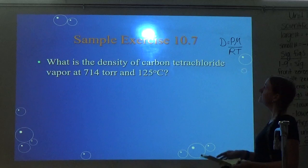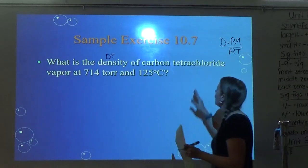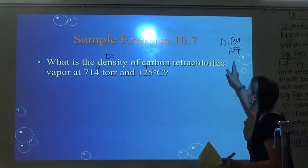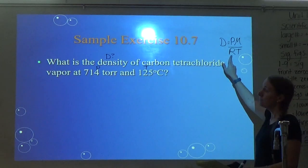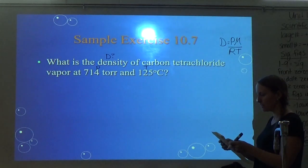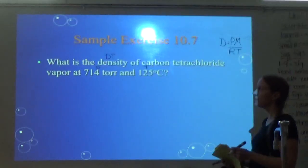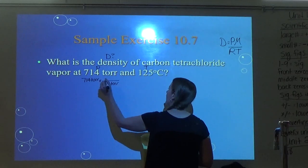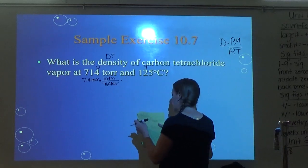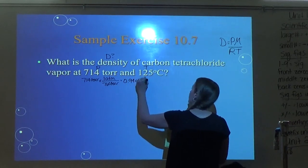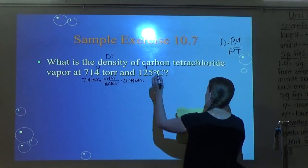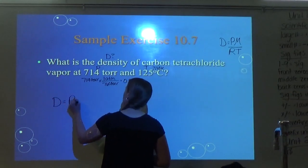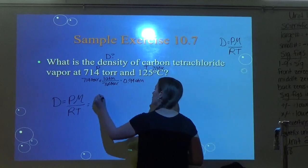What is the density of carbon tetrafluoride vapor at 714 torr and 125 degrees Celsius? I chose to use the ATM R value, so I need to convert 714 torr: 714 torr times 1 ATM over 760 torr gives 0.94 ATM. Temperature: 125°C plus 273 equals 398 Kelvin.